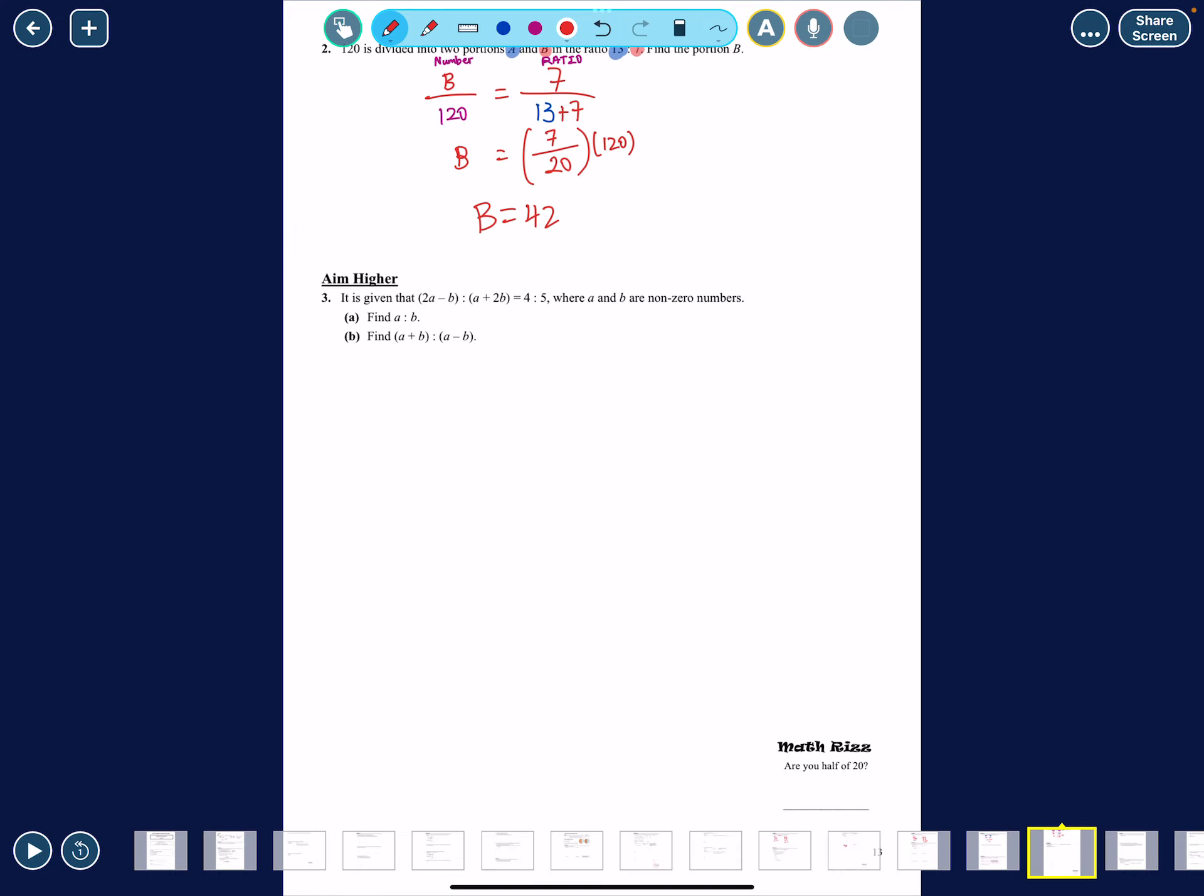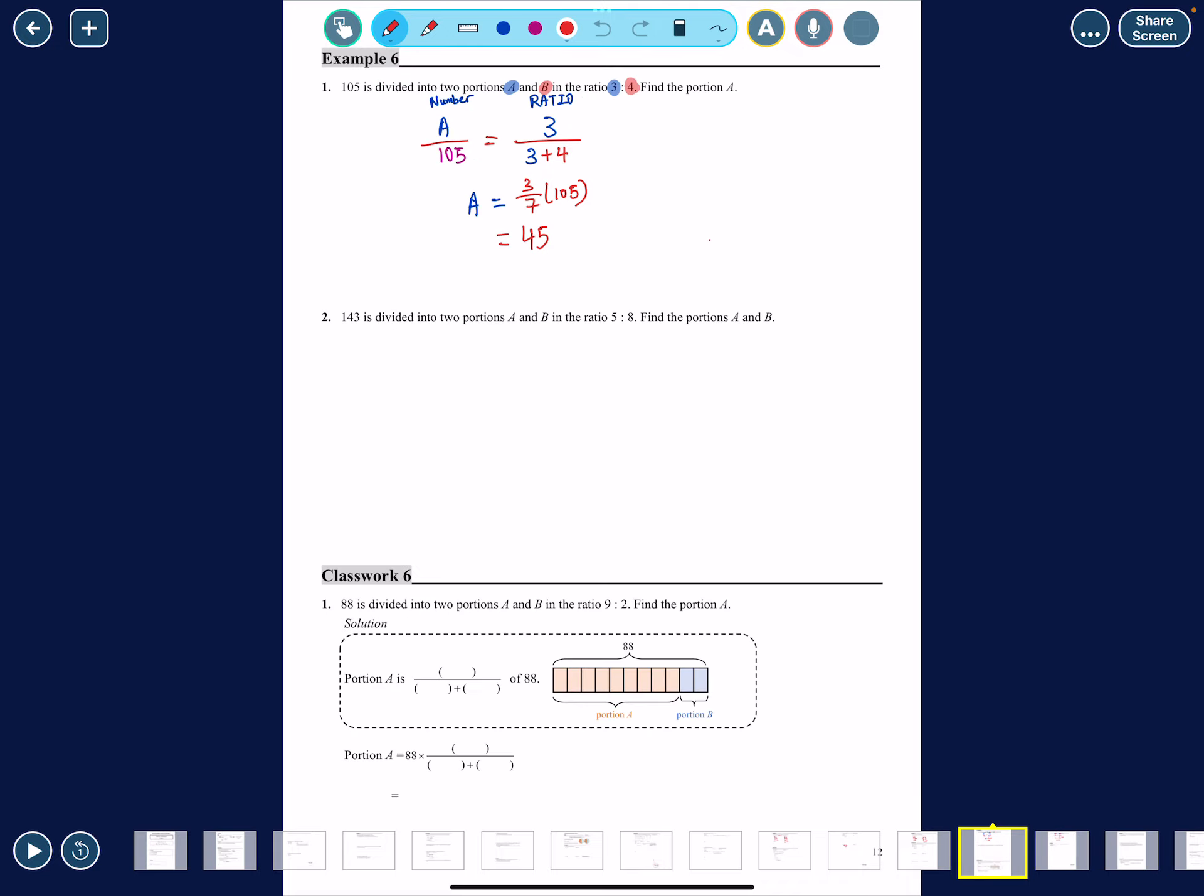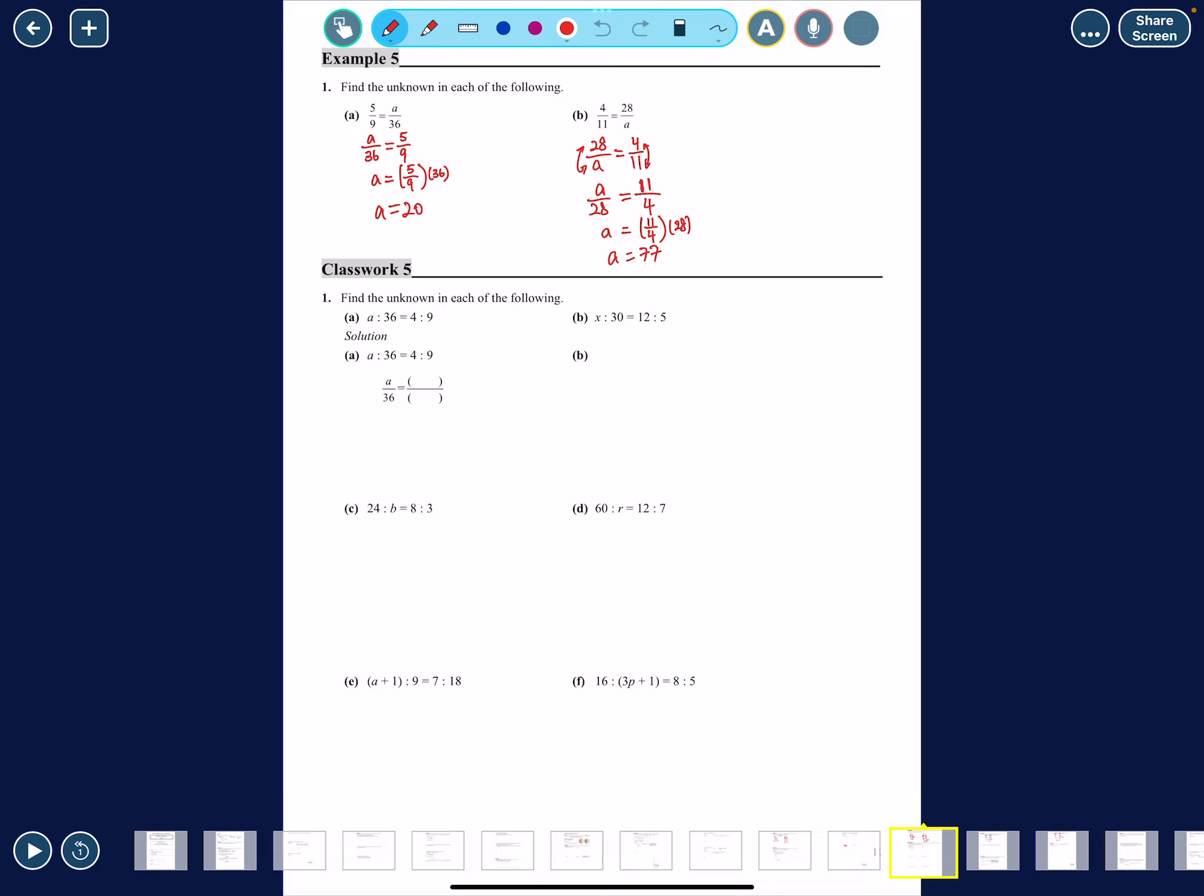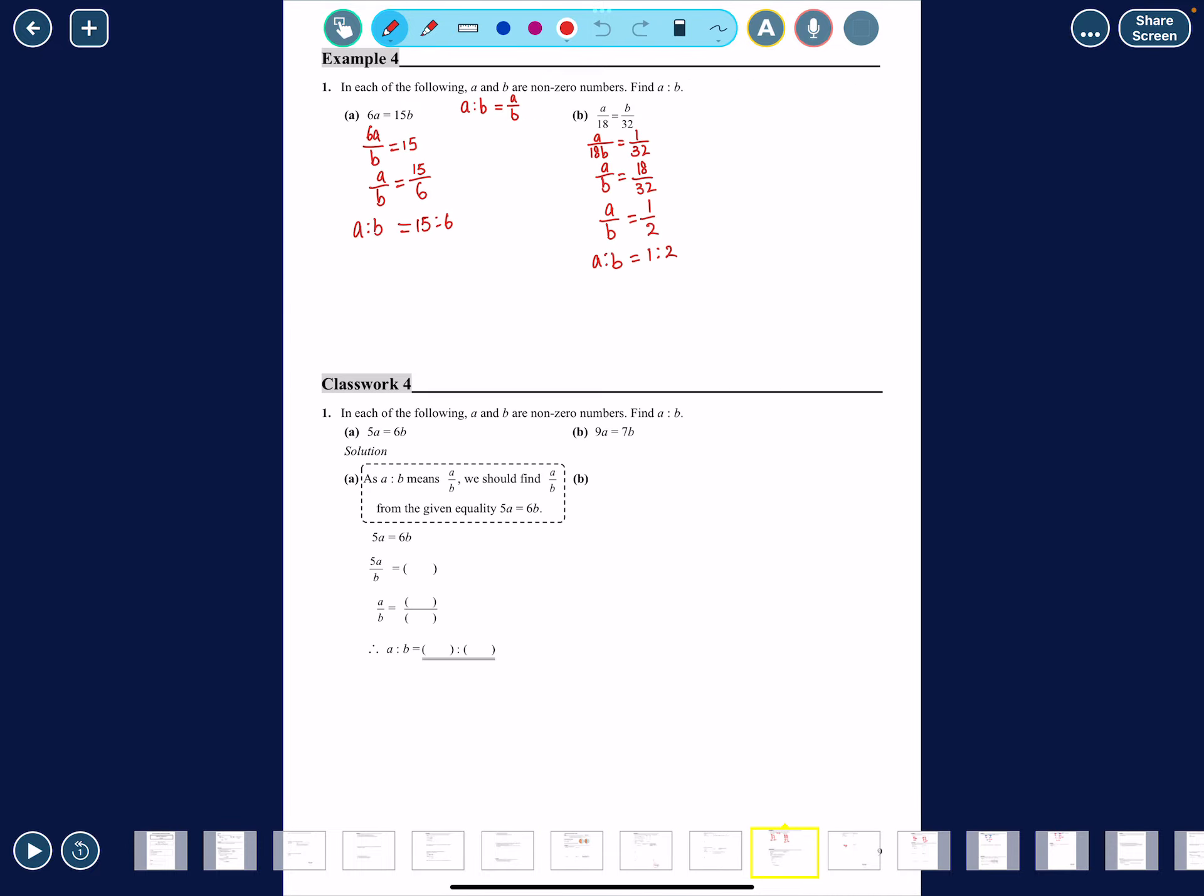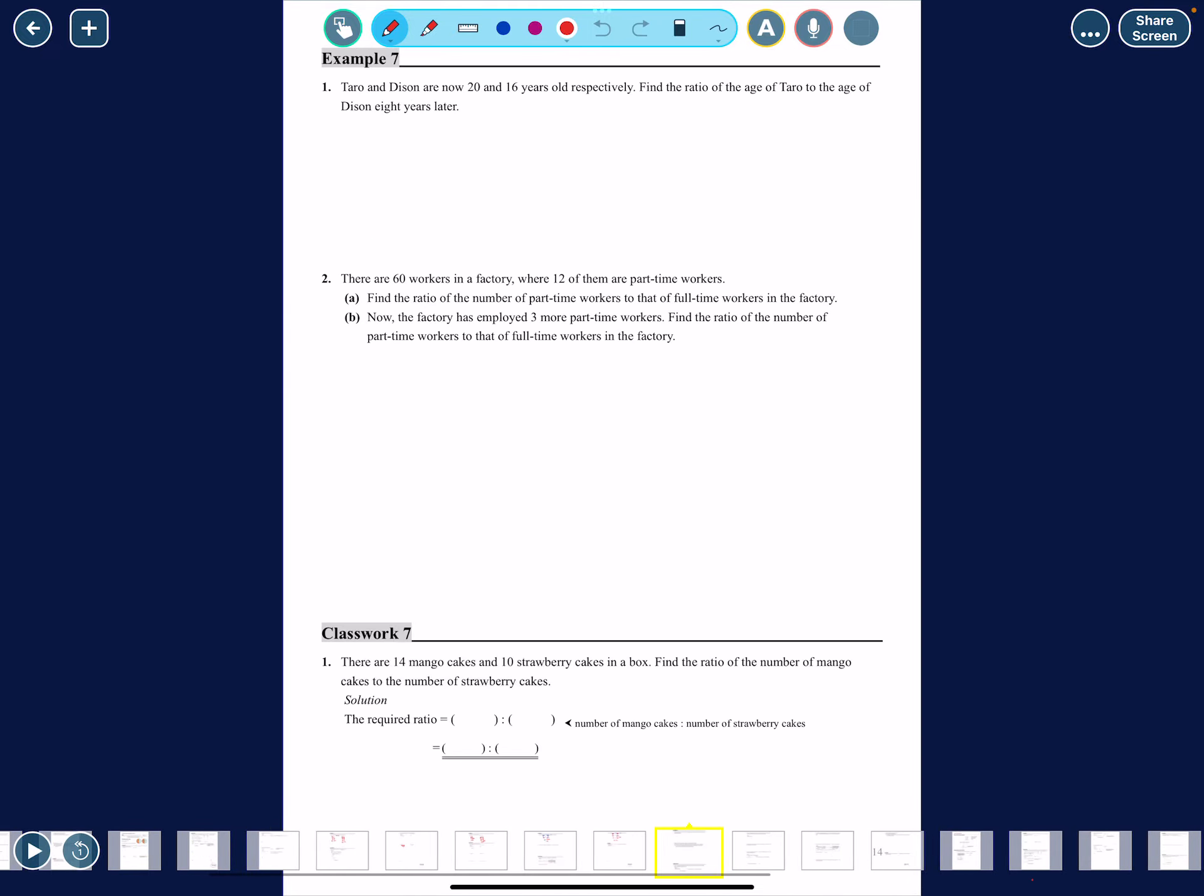7 divided by 20 times 120 is 42, so you have 42 for, oops, P. The portion for B will be 42, and that's how you do this question. I'm using this way because I want to keep things consistent throughout the whole chapter. I've been using this ratio method since the beginning and I'm planning to use this method throughout.